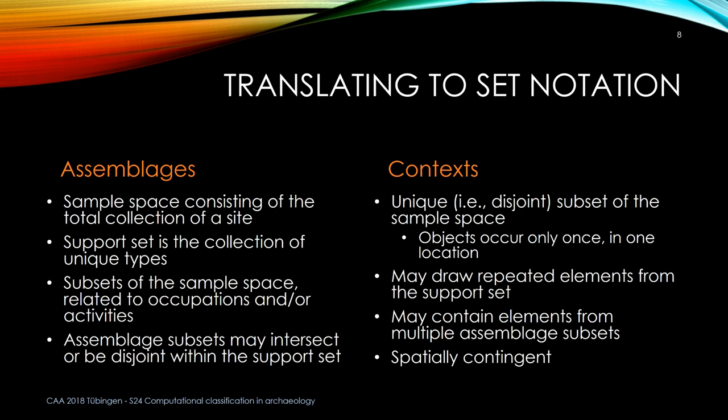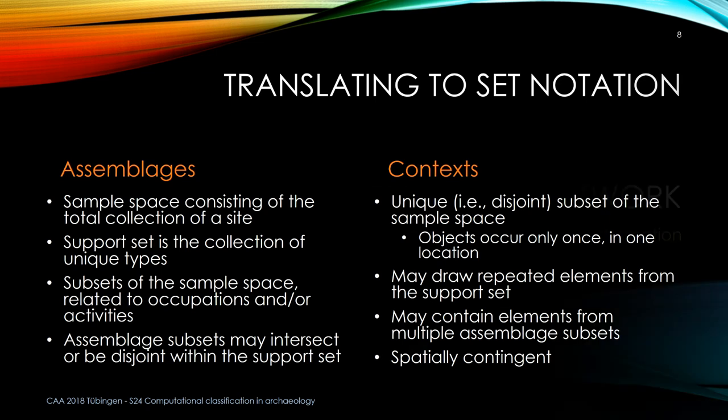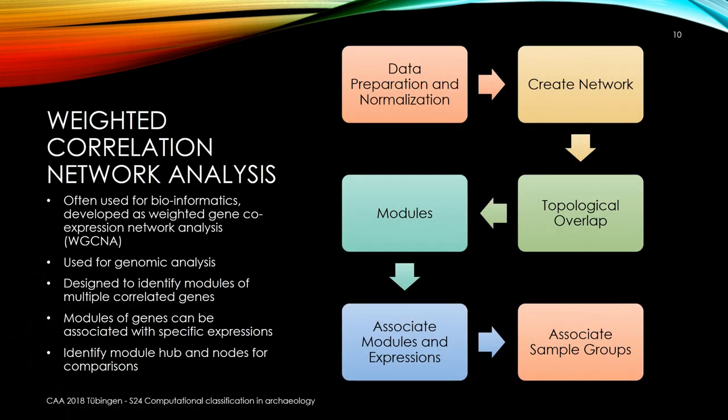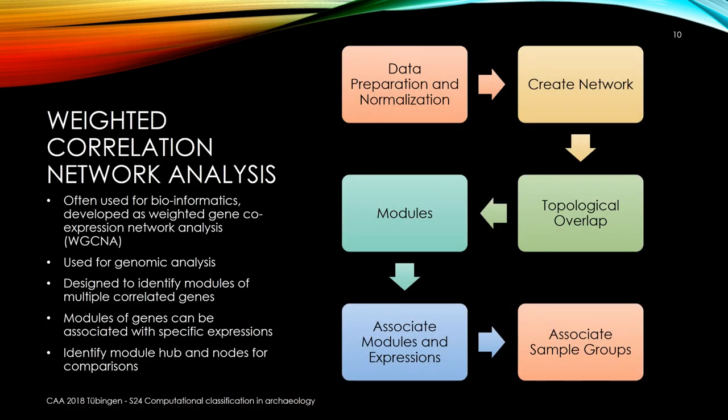Assemblages in set notation — that's fairly straightforward. We have types, we have lists; each component, each excavated provenience, each site has a list of things in it with a multiplicity. So, assembling the network: last year I presented on something called weighted correlation network analysis.